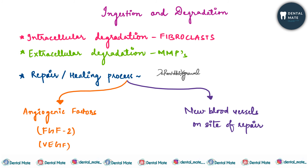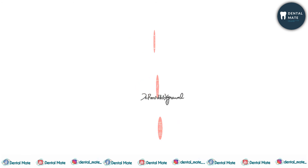So to summarize, fibroblasts perform two functions: homeostasis of collagen in the pulp, playing a dual role of formation and ingestion/degradation of collagen; and repair or healing process during inflammation through angiogenic factors and new blood vessel formation. That is all about the fibroblasts. Stay tuned, keep visiting, thank you.